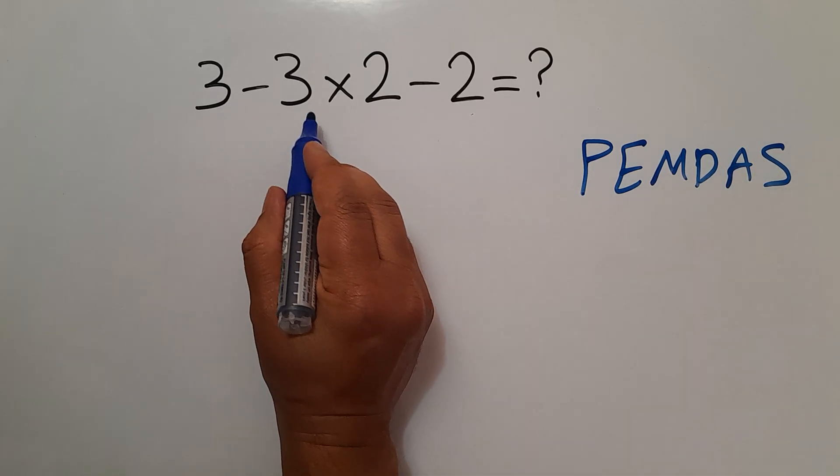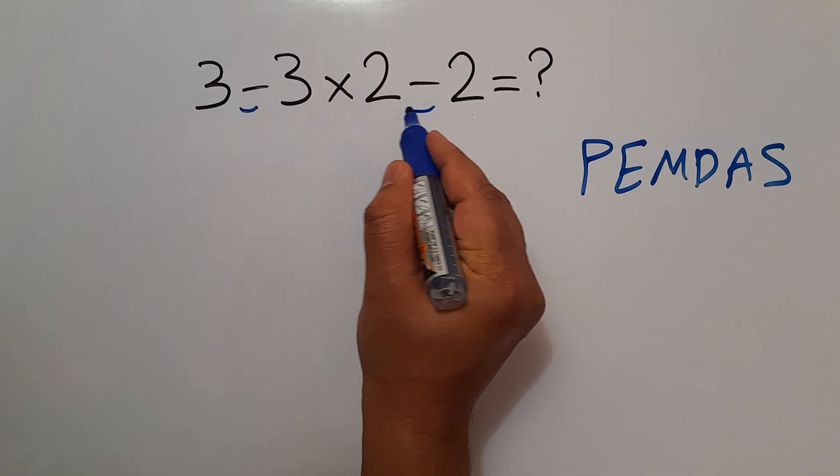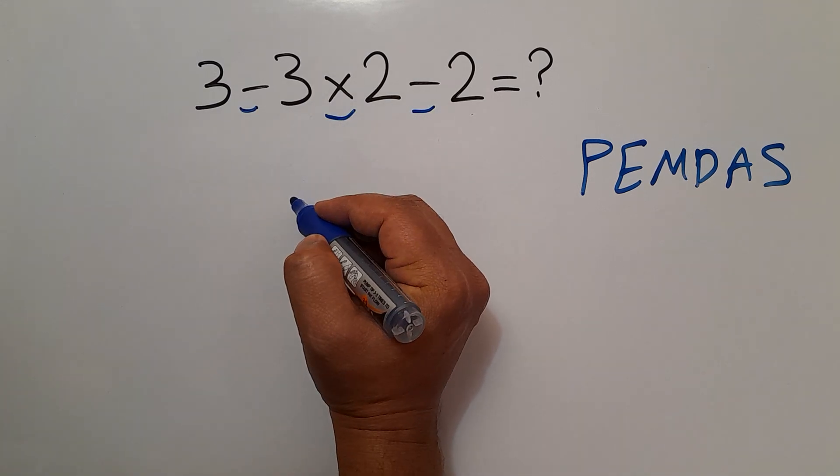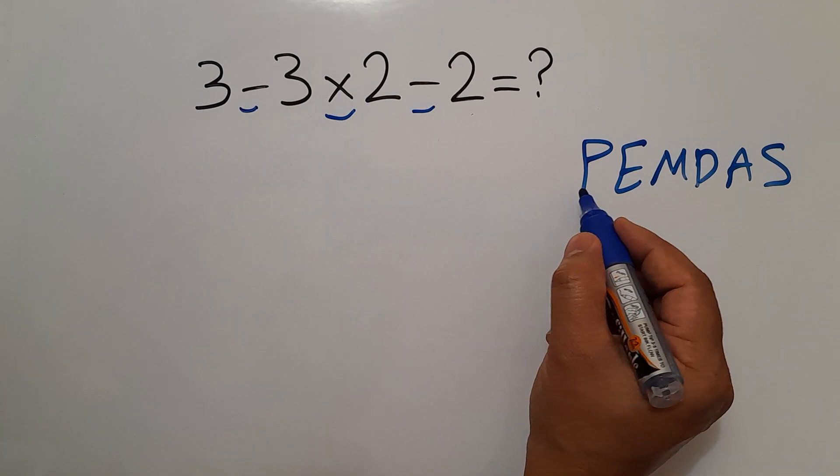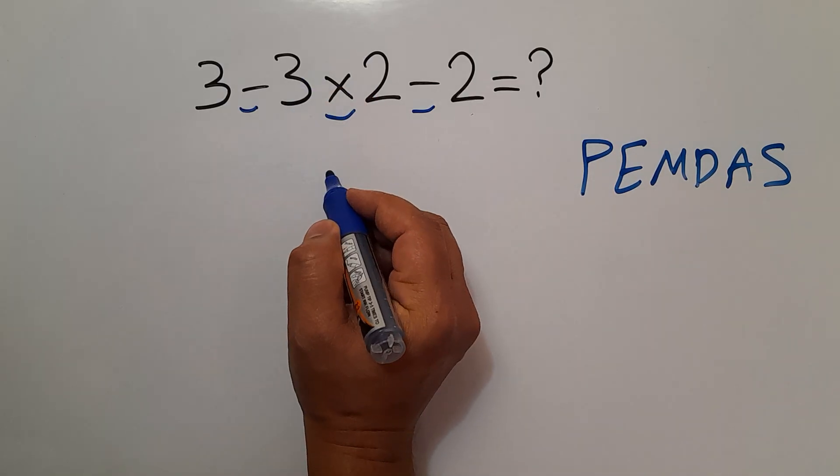So here, we have two subtractions and one multiplication. According to the PEMDAS rule, we have to do this multiplication first.